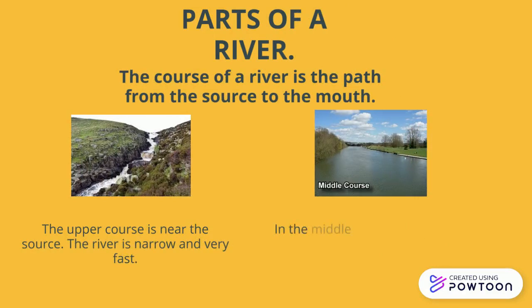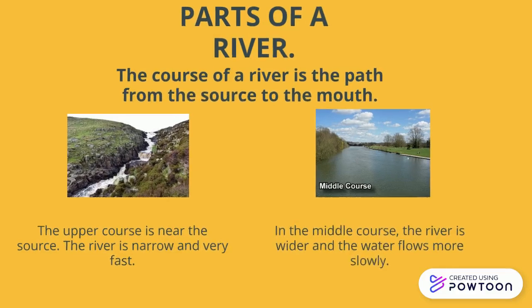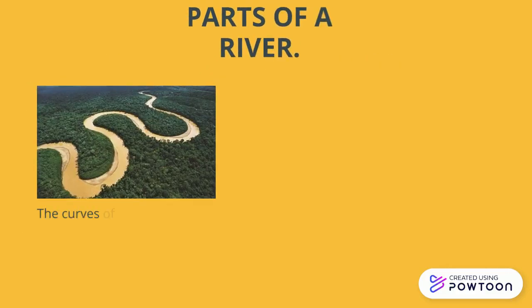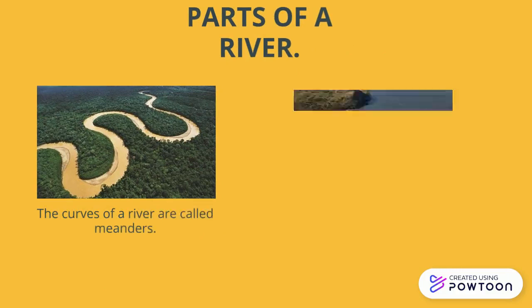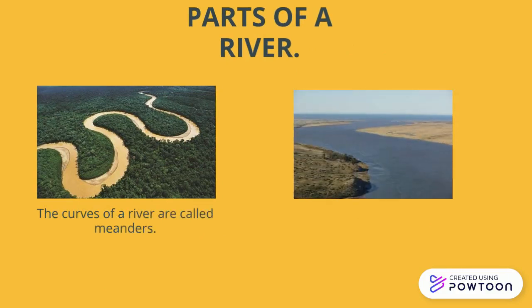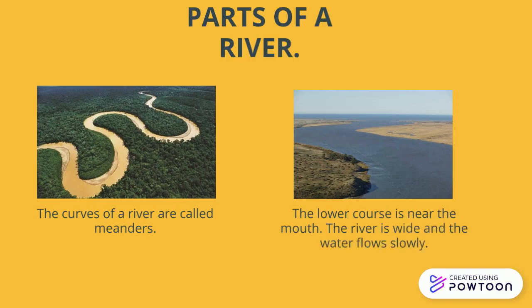In the middle course, the river is wider and the water flows more slowly. The curves of a river are called meanders. And finally, the lower course is near the mouth — the river is wide and the water flows slowly.